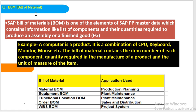Bill of material is also called BOM and is one of the master data in the SAP PP module. BOM is helpful in production planning. There are several kinds of BOMs: Material BOM, Equipment BOM, Functional Location BOM, Order BOM, and WBS BOM. Material BOM is used in production planning, Equipment BOM in plant maintenance, Functional Location BOM in plant maintenance, Order BOM in sales and distribution, and WBS BOM in the project system.